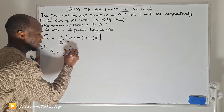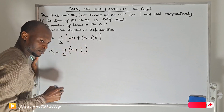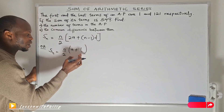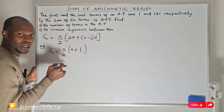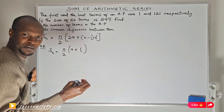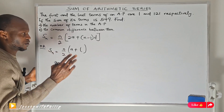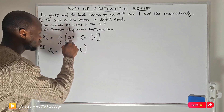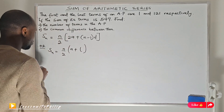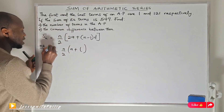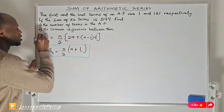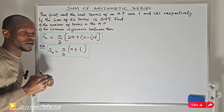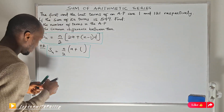The second formula is n divided by 2 multiplied by the first term plus the last term. Use this formula when you are given the last term, the first term, and the number of terms. If you are given the common difference, the number of terms, and the first term, then use the first formula. These are the two formulas for the sum of arithmetic progression.